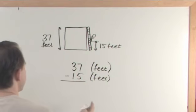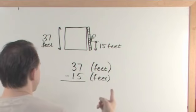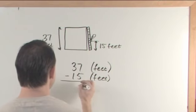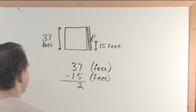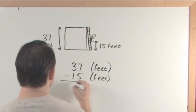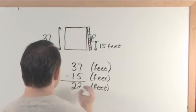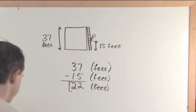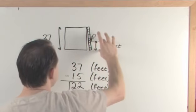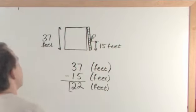So we do 37 feet minus 15 feet. Starting in the right-hand column, 7 minus 5 is 2. Then 3 minus 1 is 2. The answer is 22 feet. So if you have a house that's 37 feet high and you're standing 15 feet off the ground on a ladder, you must climb 22 more feet to reach the top.